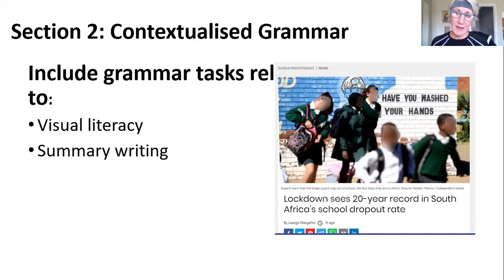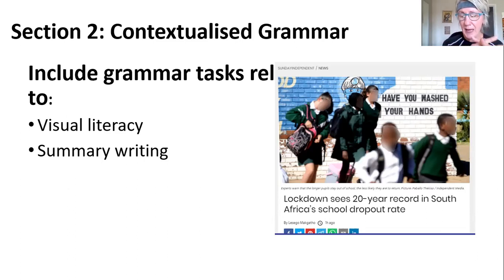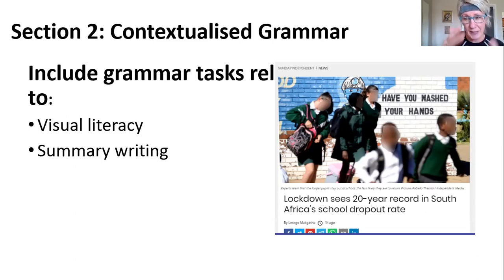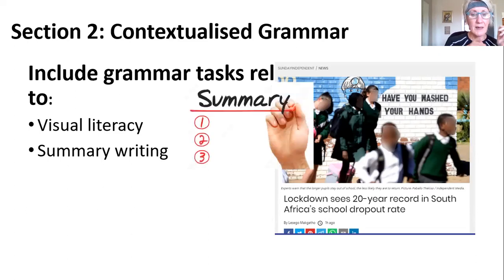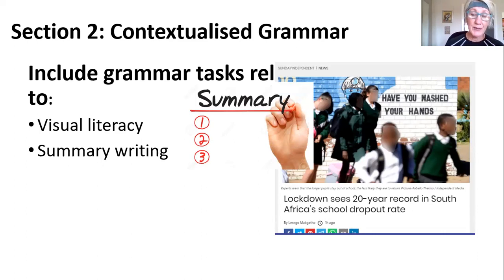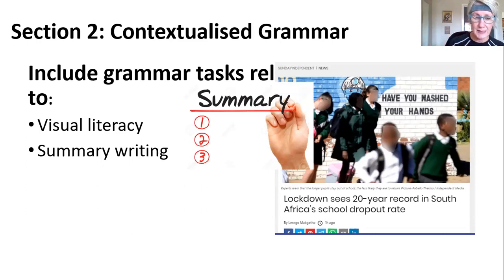Summary writing — you're going to choose a topic from the article on which they must actually write a summary. If you are FET or SP, there are different requirements, different lengths. I'm going to give you an example of how this could possibly be done. That's a point form summary. For FET home language, you've got to do a paragraph. For SP home language and FAL, you can do a paragraph or you can do a point form type summary. There are different word lengths for the actual summary as well.